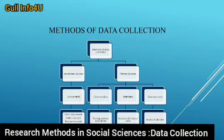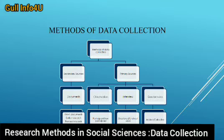When we talk about secondary sources, we have documents such as government documents, earlier research, personal records, and clients' histories like case studies. Whereas for primary sources, it contains questions, questionnaires, interviews, and observations. Questionnaires could be mailed or collective; interviews could be structured or unstructured; observations could be participant or non-participant. We have details in the coming slides.